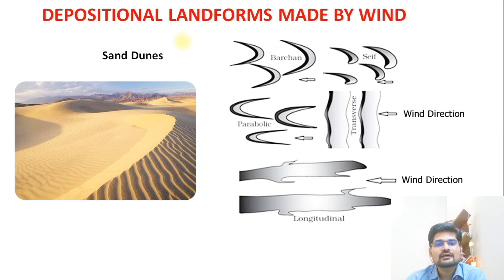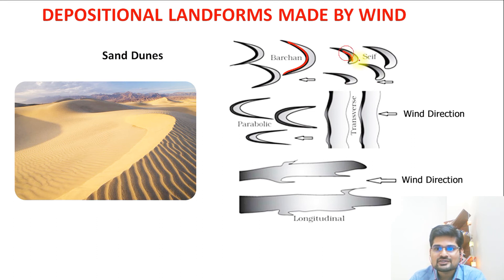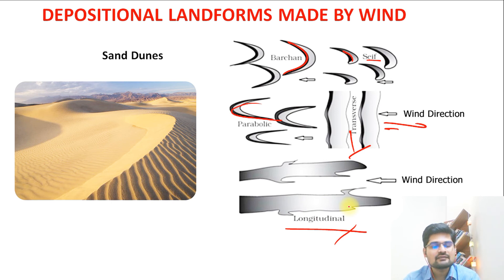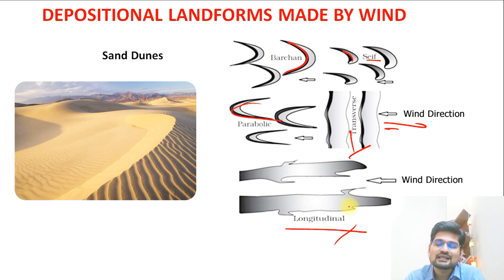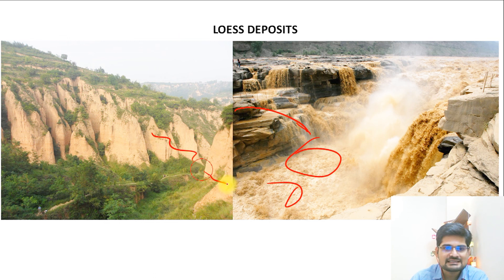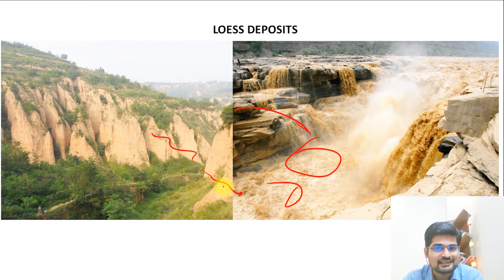Depositional landforms made by wind include various types of sand dunes: barchan (crescent-shaped), seif (half-crescent), parabolic, transverse, and longitudinal dunes. Loess deposits — fine yellow silt sediments — are also wind-deposited features, as seen with China's Yellow River (Huang He), which gets its color from loess deposits.